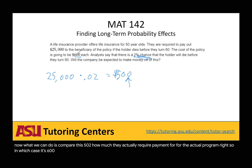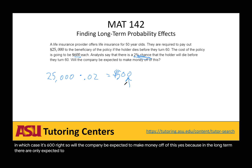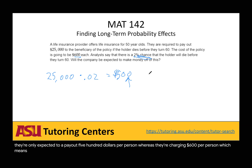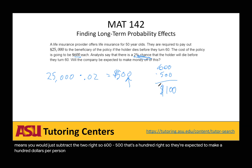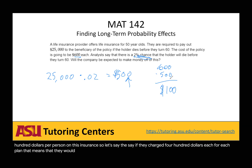The premium is $600. So will the company be expected to make money? Yes, because in the long term they're only expected to pay out $500 per person, whereas they're charging $600 per person. So $600 minus $500 equals $100 — they're expected to make $100 per person on this insurance. If they charged $400 each, they would be losing $100, which isn't a good business model for a life insurance provider.